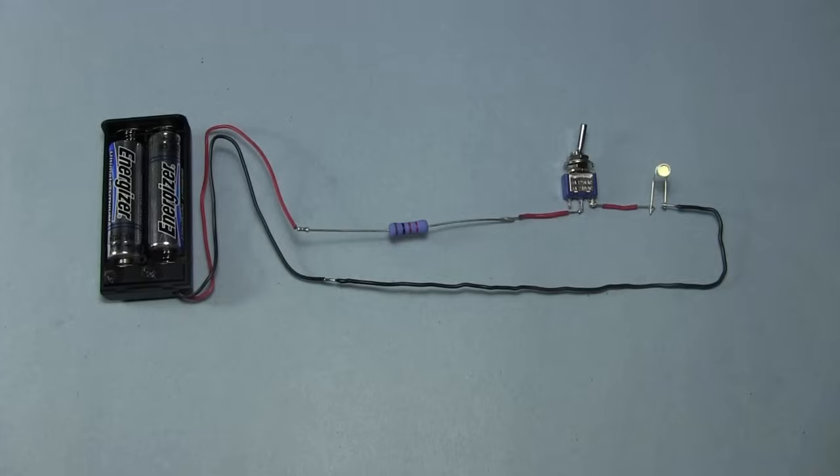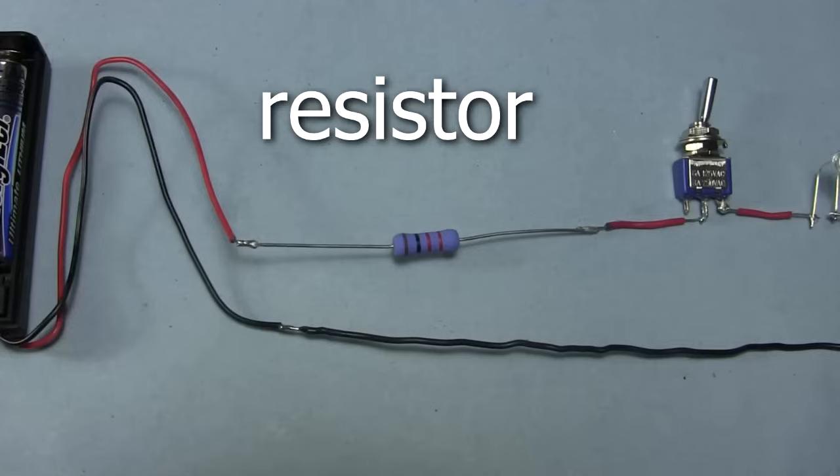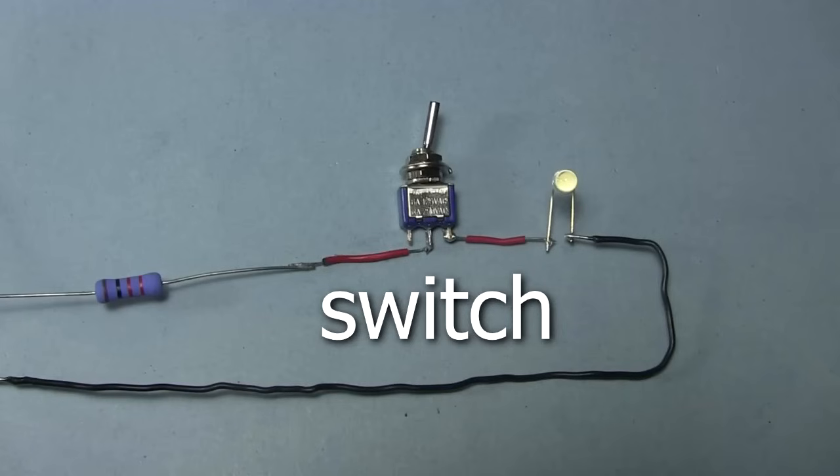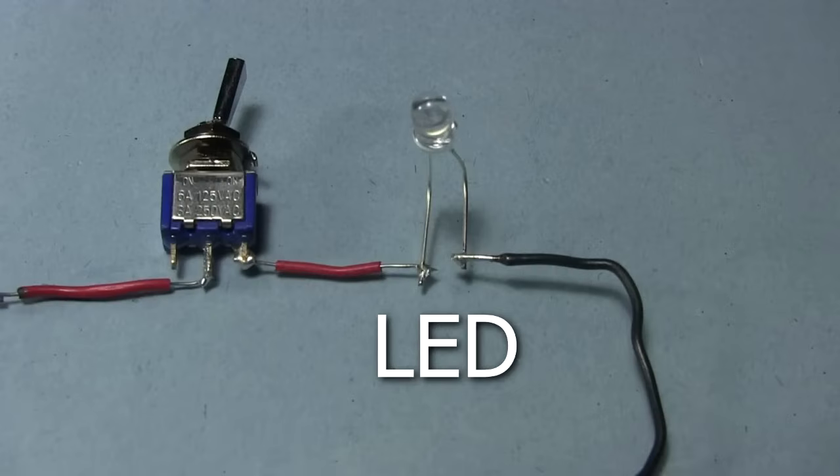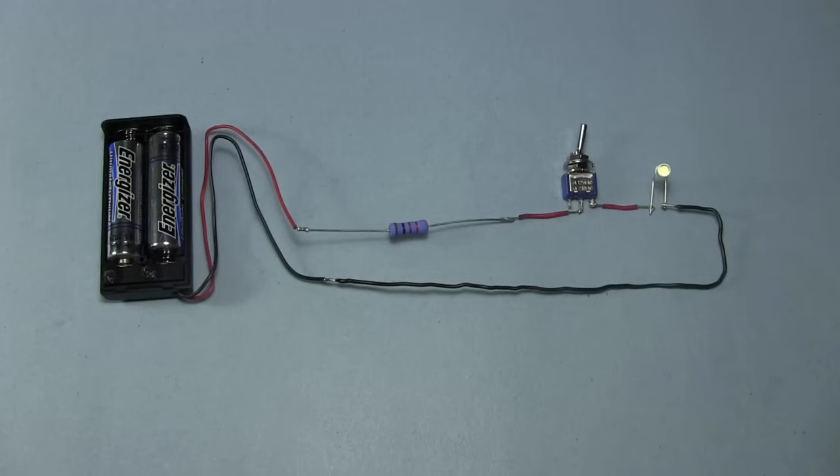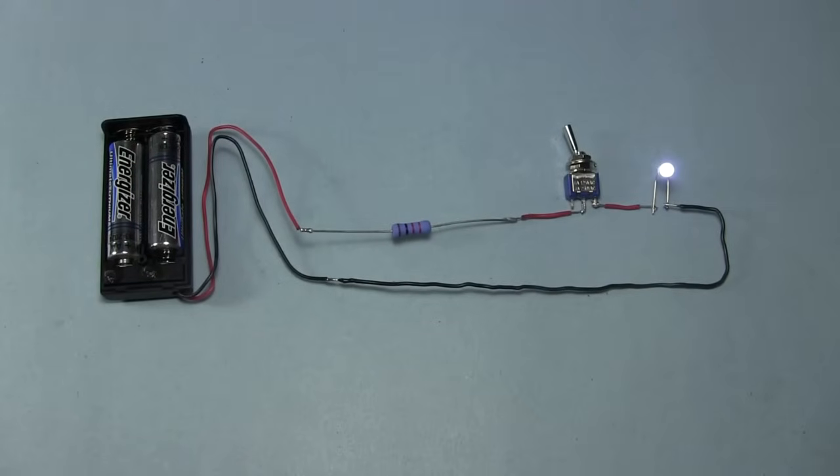Let's start with a very simple circuit. There's some batteries, a resistor, an on-off switch, and an LED. And of course there are also the wires connecting it all together. We flip the switch to the on position and the LED lights up.